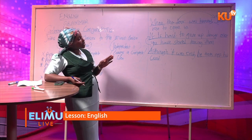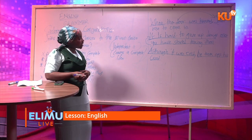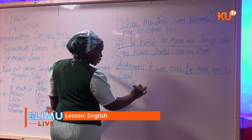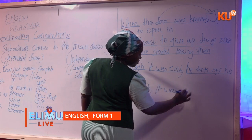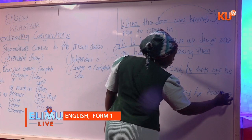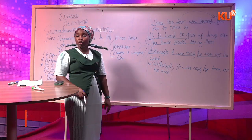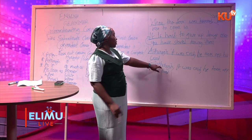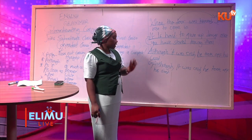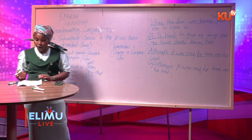Also, some students write 'although it was cold,' putting a comma after 'although.' That is wrong punctuation. Although it was correct grammatically, after the subordinating conjunction that starts the sentence, you are not supposed to put a comma. So as you are punctuating your work, be very careful.